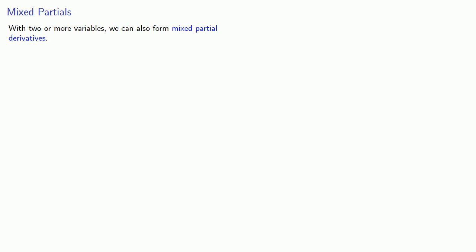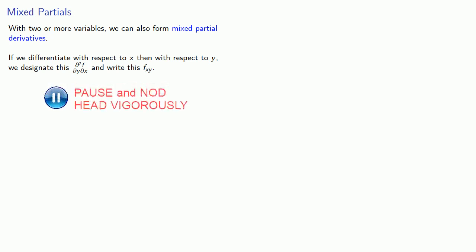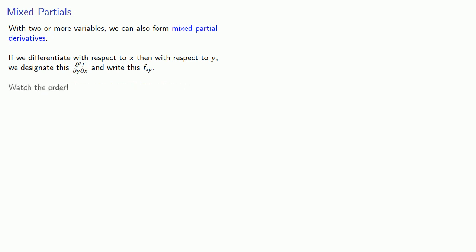Our notation for that: if we differentiate with respect to x and then with respect to y, we designate this using differential notation. We can also indicate this using subscript notation. Watch the order — with differential notation, the variable of differentiation goes from right to left, while with function notation, the variable we're differentiating with respect to goes from left to right.